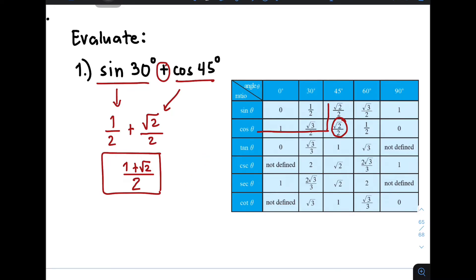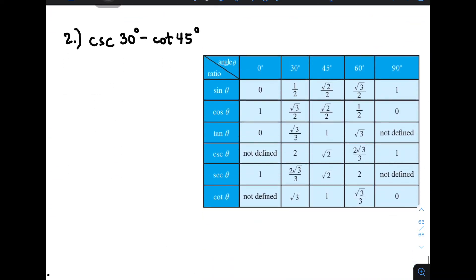Now let's move on with item number 2. For item number 2, we are given cosecant 30 degrees minus the cotangent 45 degrees. So again, to evaluate this, let's get the value or the exact value of cosecant 30 degrees. And this is it, which is 2.